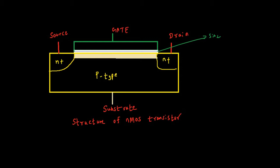Since we have a dielectric here which acts as an insulator, there is no path for current to flow into the gate terminal, so the input impedance of the gate terminal is very high. Also, the minimum size that can be realized using VLSI technology is called the feature size of the technology.